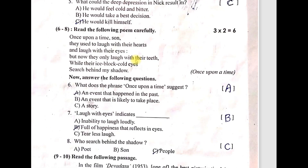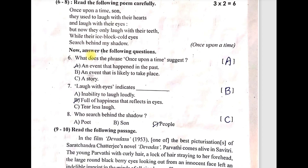For questions six to eight, these are from the poems. There are three poems — 'Once Upon a Time,' 'The Dreamer Will Awake,' or 'Unity in Diversity,' which is the last poem. Sixth question: What does the phrase 'once upon a time' suggest? The right answer is A — an event that happened in the past. Seventh question: 'Laugh with eyes' indicates full of happiness that reflects in the eyes — right answer is happiness.